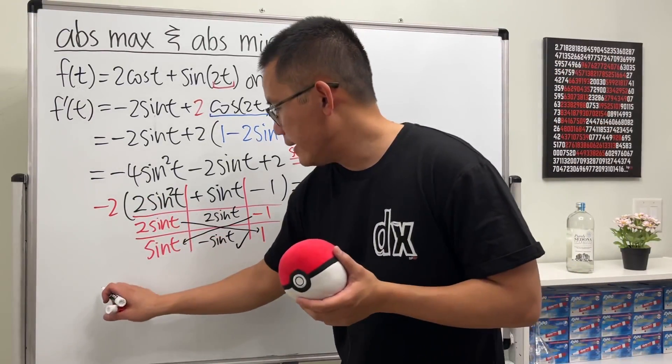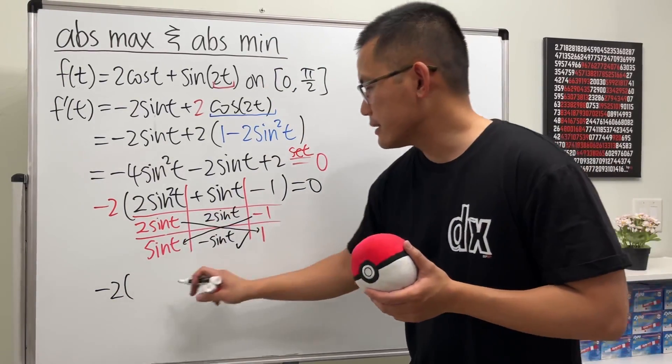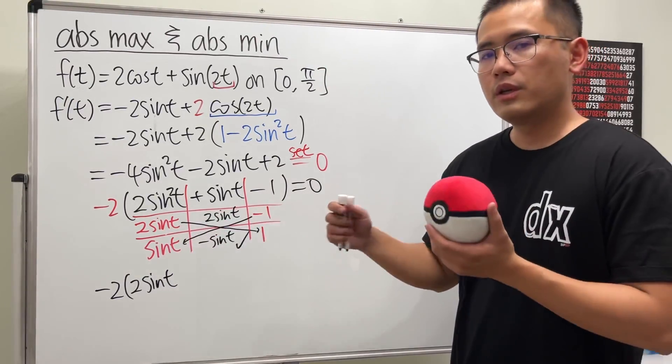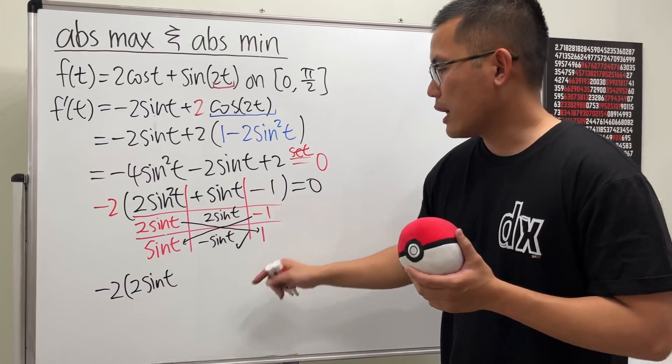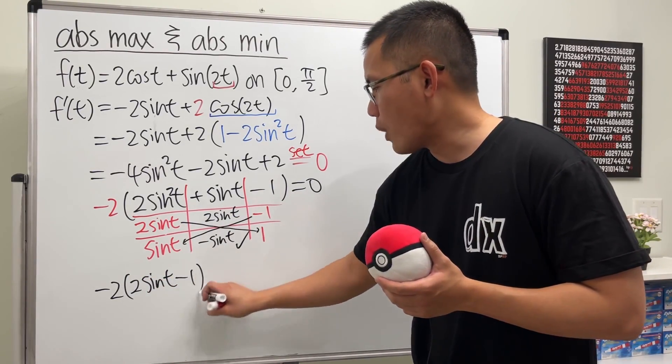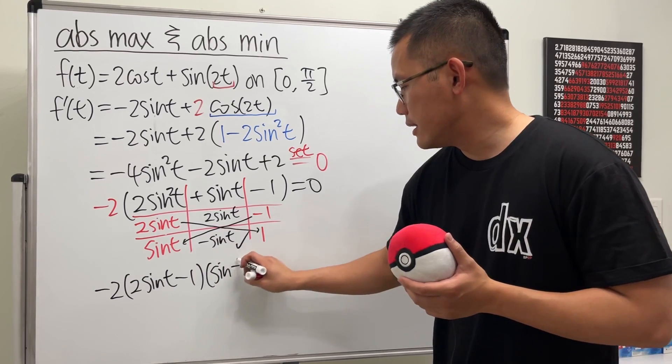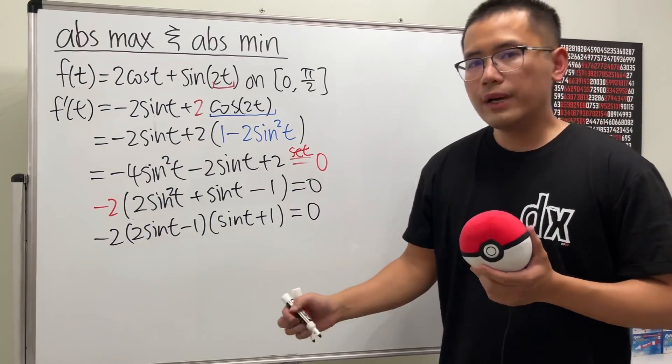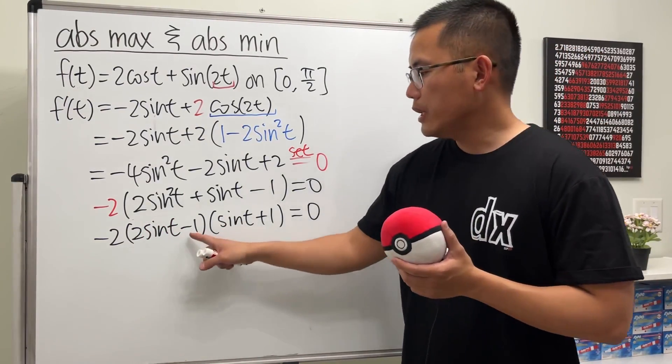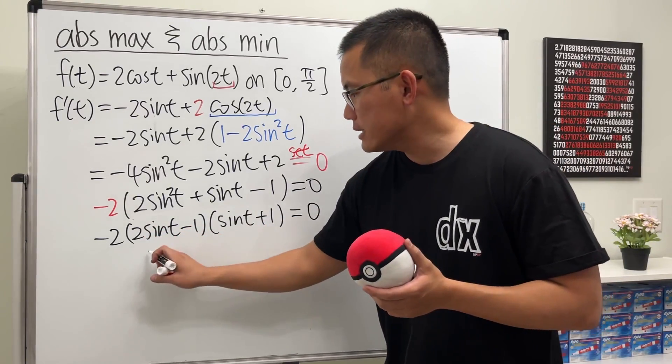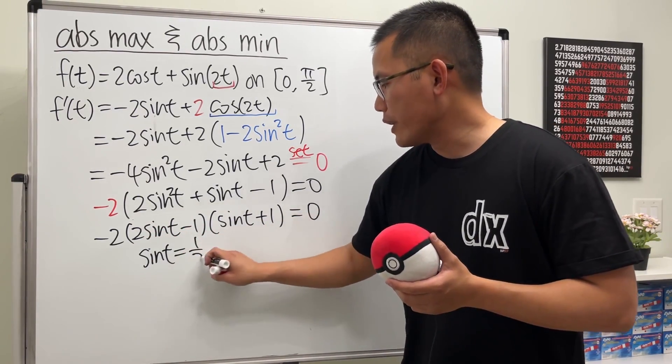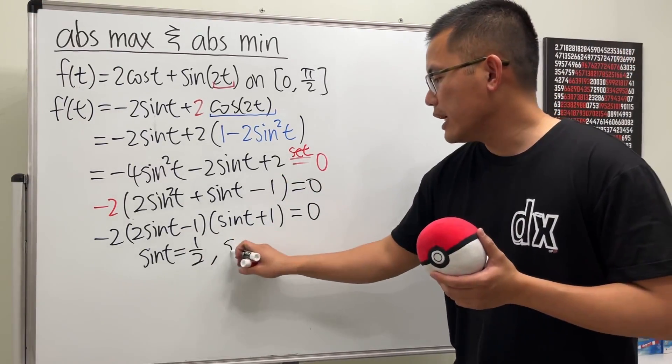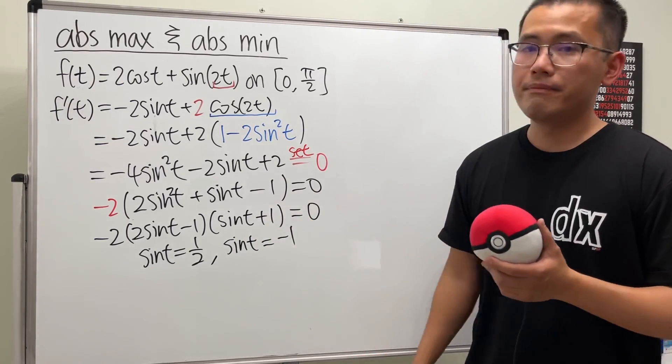So altogether, we get -2 times this minus that. So 2sin(t). And when you use this, when you write down the answer, you go across. So 2sin(t) - 1. And then sin(t) + 1. And we make this equal to 0. All right, to continue, we have to make this factor equal to 0. So we can put the -1 to the other side and then divide the 2 on both sides. So we get sin(t) being equal to 1/2. And then put this to be 0. We put the 1 to the other side. So we get sin(t) being equal to -1.